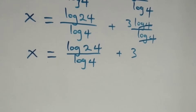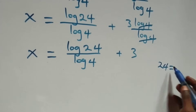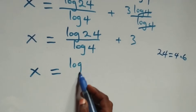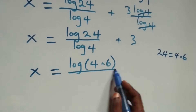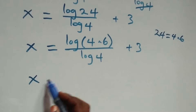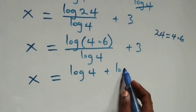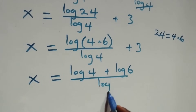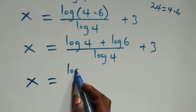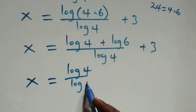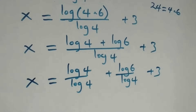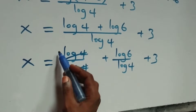Next, twenty-four can be expressed as four times six. So we have x equals log of four times six over log four plus three. Applying the log product law, this becomes x equals log four plus log six all over log four, plus three. Separating into two fractions: log four over log four plus log six over log four, plus three. Log four cancels leaving one.